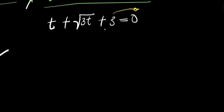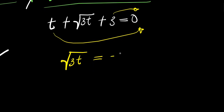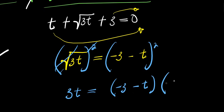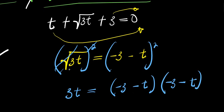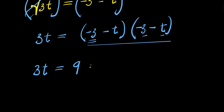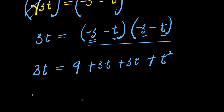Moving three over, we get square root of three t equals negative three minus t. Taking squares of both sides, the square root cancels, giving three t equals negative three minus t times negative three minus t. Expanding the right side: negative three times negative three is nine, negative three times negative t is plus three t, negative t times negative three is plus three t, and negative t times negative t is plus t squared.